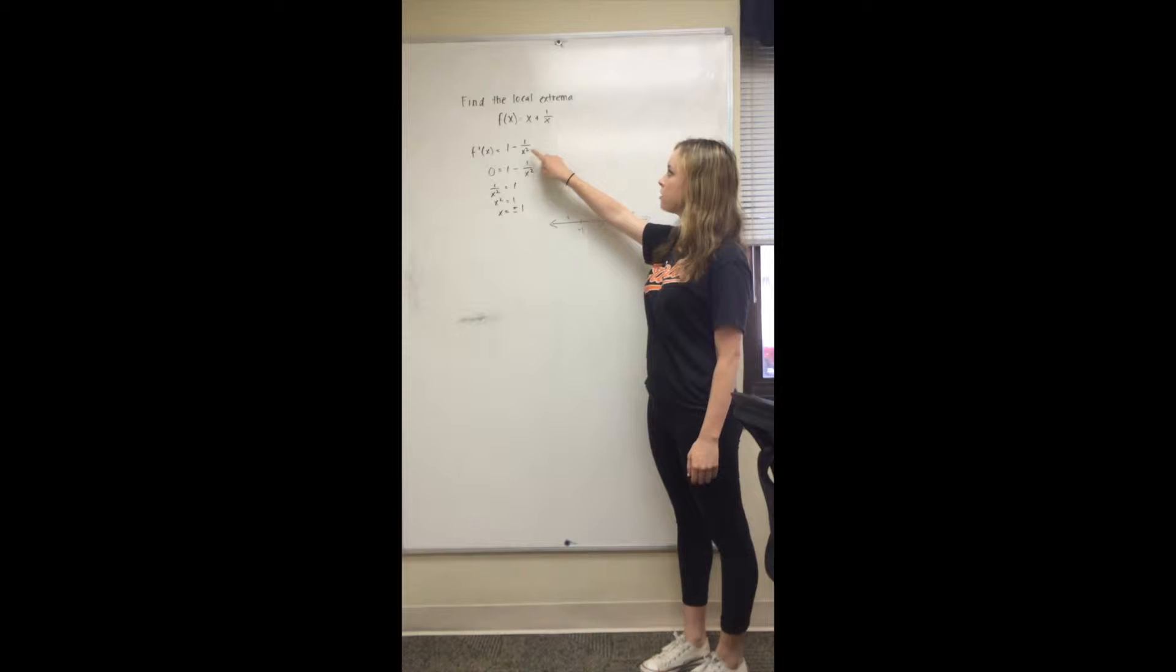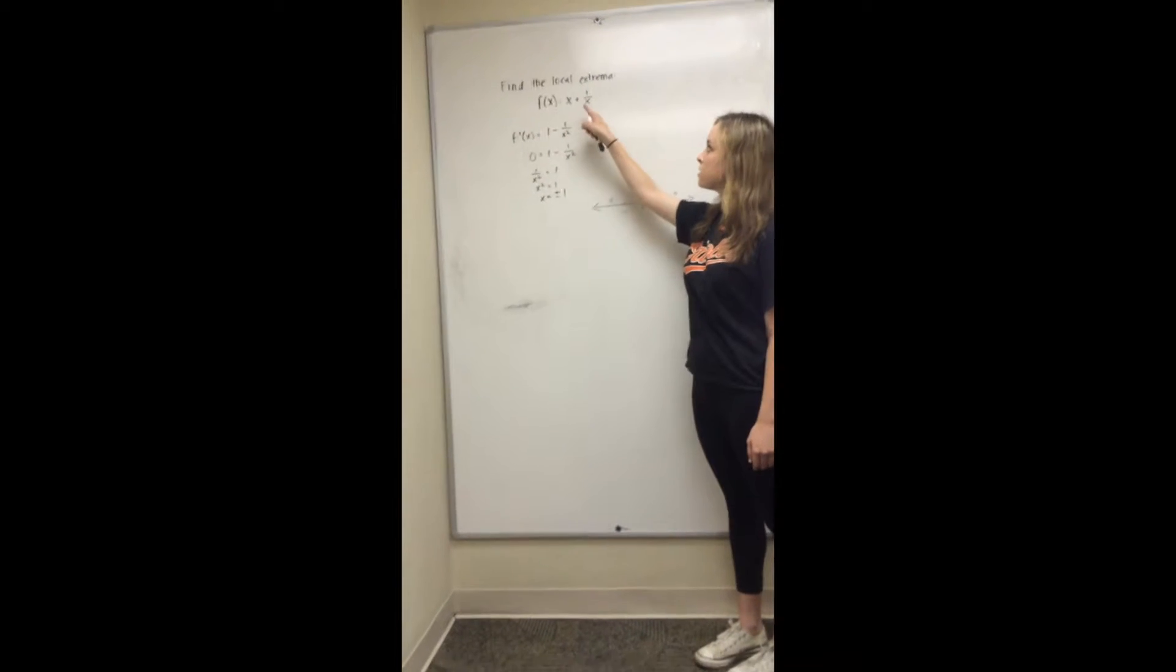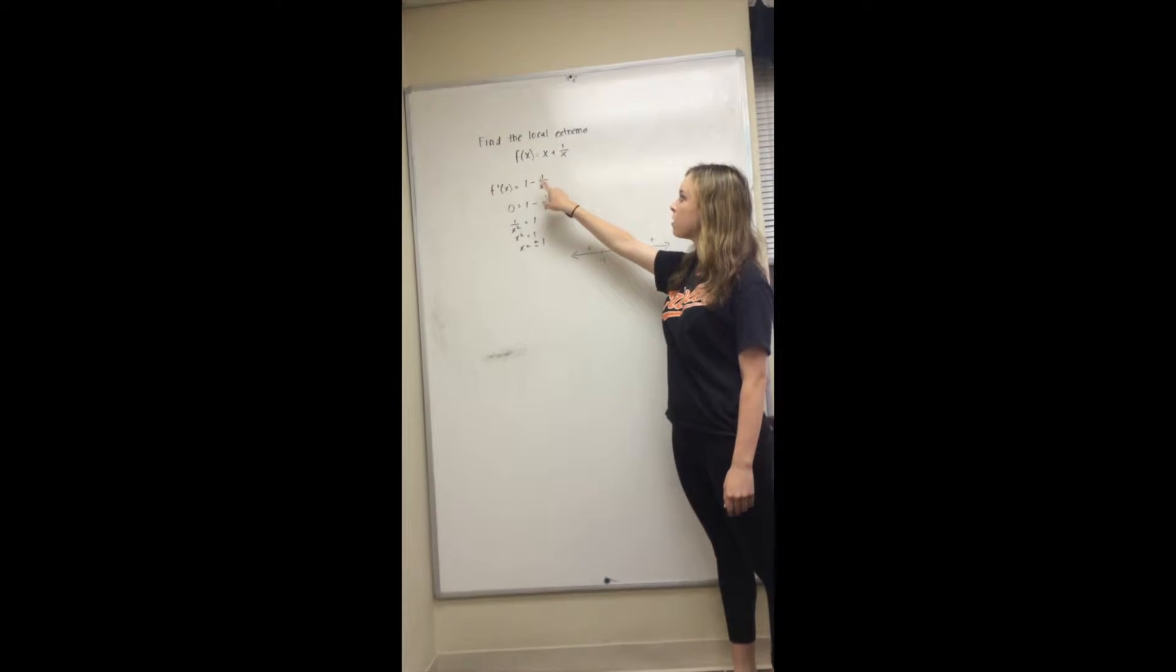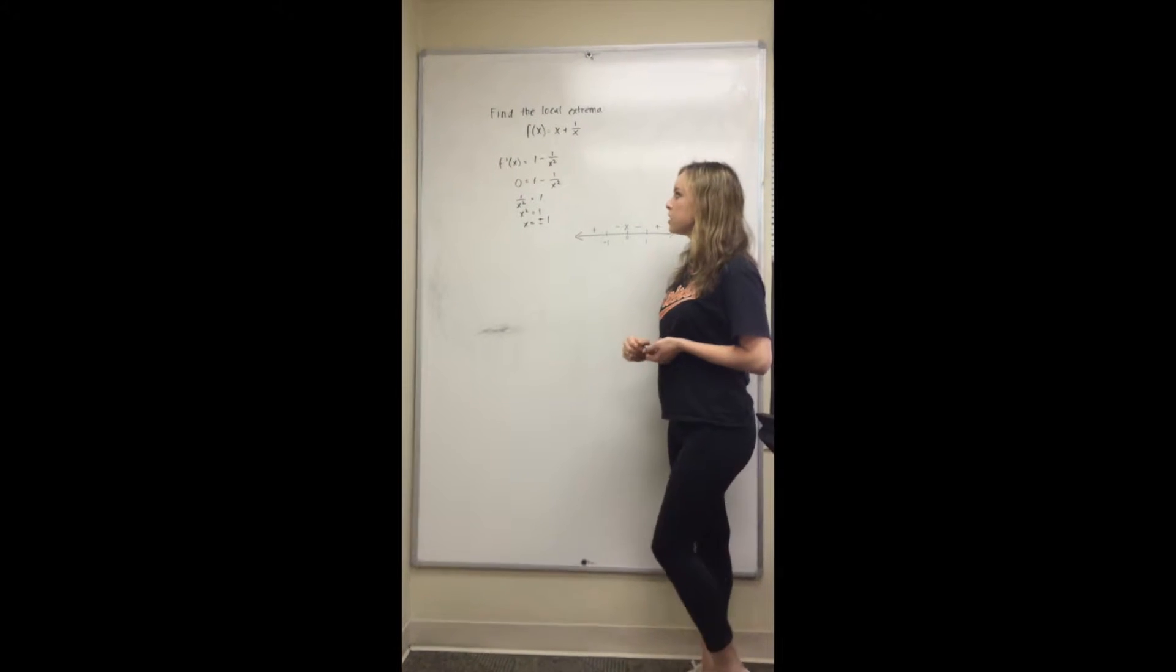First you're going to take the derivative of x, and that equals 1, and then you're going to take the derivative of 1 over x, which equals negative 1 over x squared. So if you set that equation equal to 0,